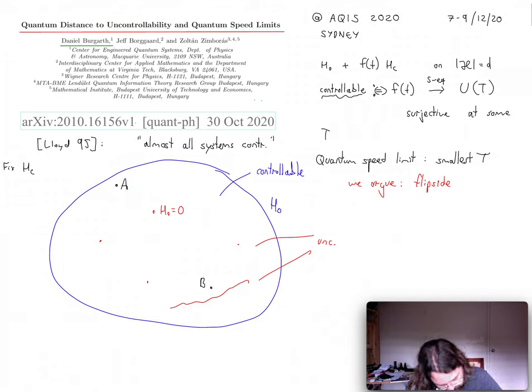And the reason is that A is further away from the nearest uncontrollable system. So we have a distance to uncontrollability, which for the B system is fairly small, and for the A system it's bigger, so it's somehow more robust.